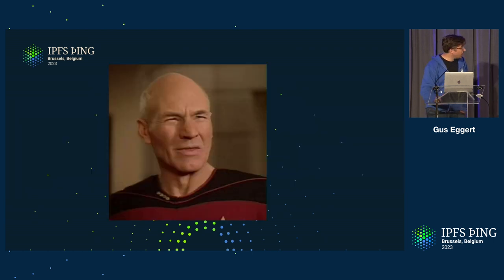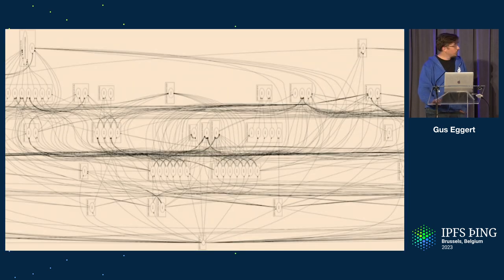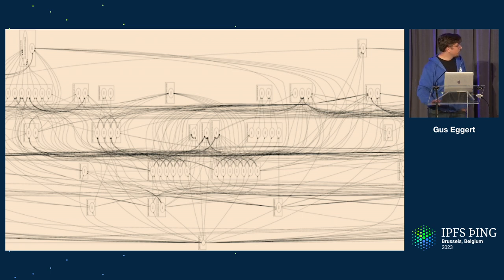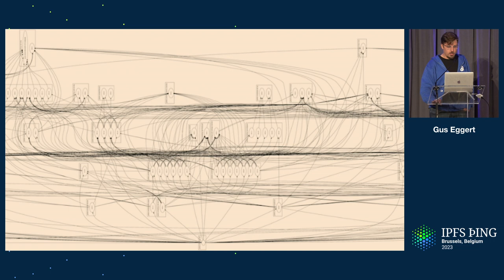You're probably squinting at it going, like, what the hell is that thing? You can zoom in a little bit. If you squint hard, you can see some boxes, some circles. The boxes are Go modules and the circles are versions. So you can see a lot of these have multiple versions. The Go compiler will resolve these down to one version when you compile it.